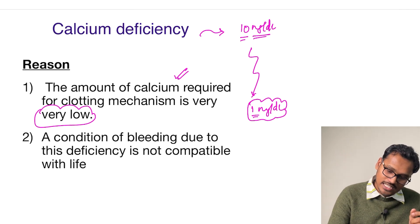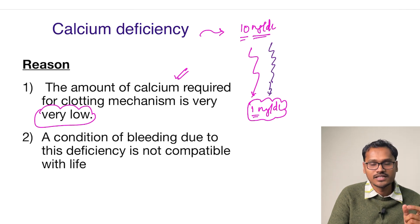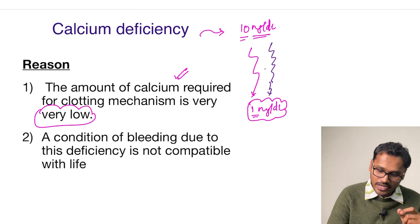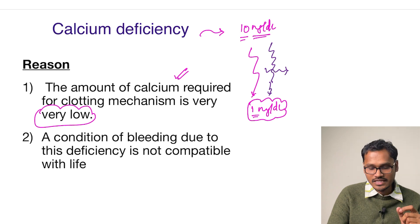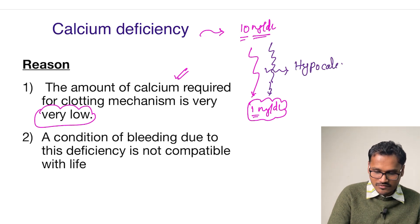calcium levels drop from 10 mg/dL toward 1 mg/dL. But before it reaches 1, the patient would have already died. Why? Because at a level midway, hypocalcemia will cause a lot